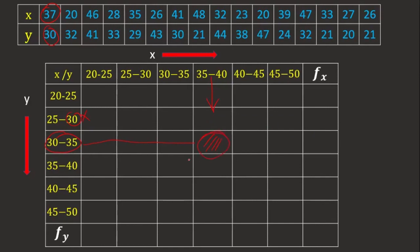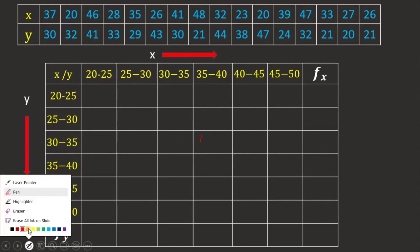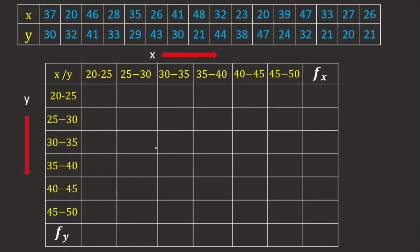At the intersection of the column for 37 and the row for 30, we place one tally mark, since it is one paired observation. Similarly, for the pair 20 and 32: 20 falls here on the horizontal axis and 32 falls in its corresponding row, so one tally mark is placed at that intersection.